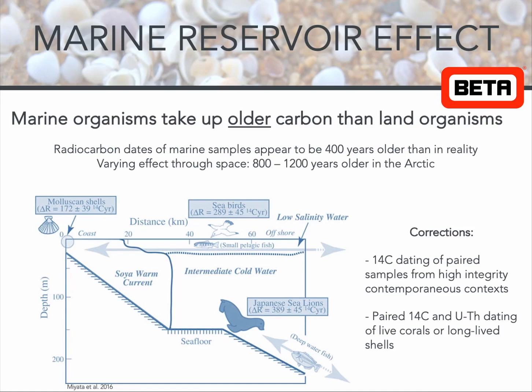It is necessary to account for changes in the Earth's oceans to correct for this marine reservoir effect. Typically, affected radiocarbon ages appear to be about 400 radiocarbon years older than they would if unaffected, as you can see from the sea lions on this diagram. However, the effect is highly variable geographically, potentially reaching an age offset of 800–1200 radiocarbon years in Arctic regions.